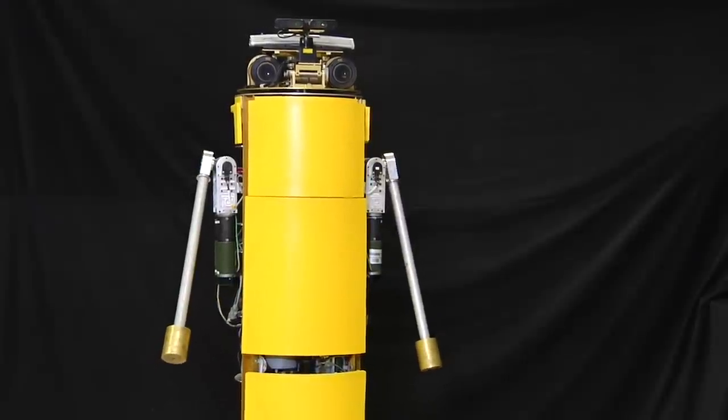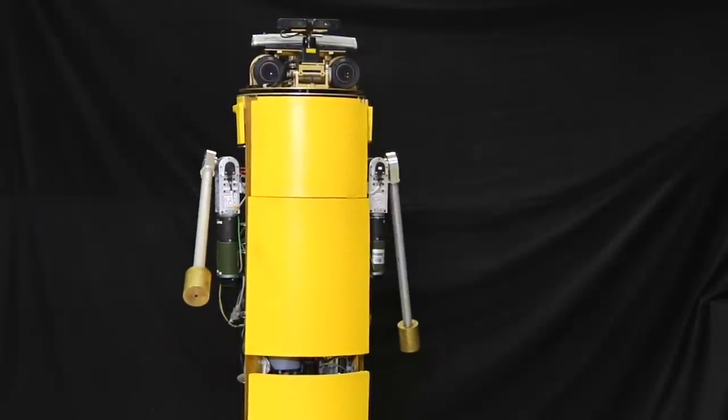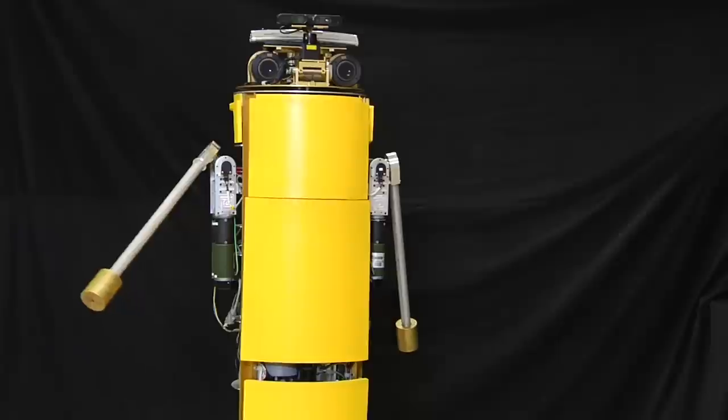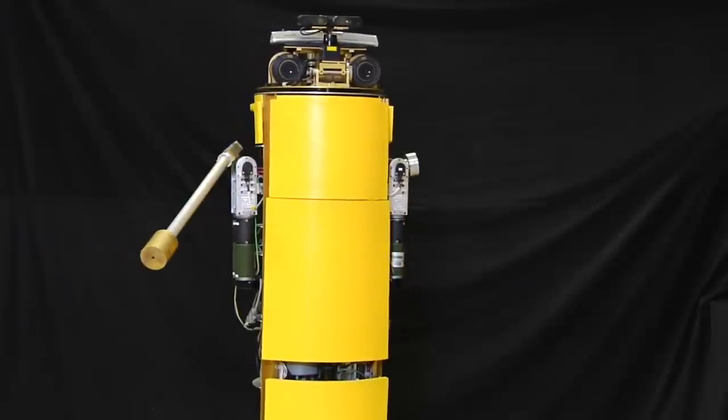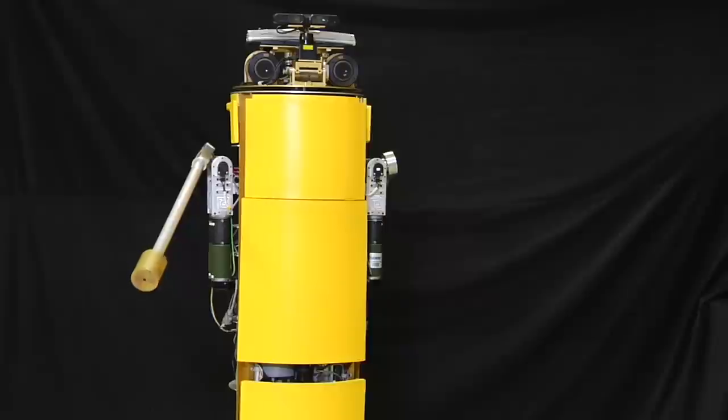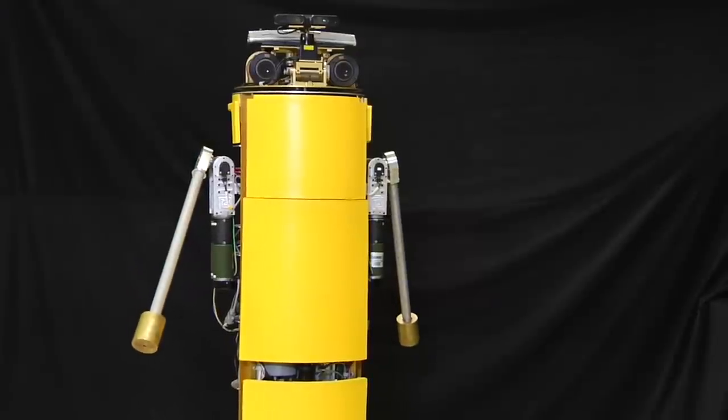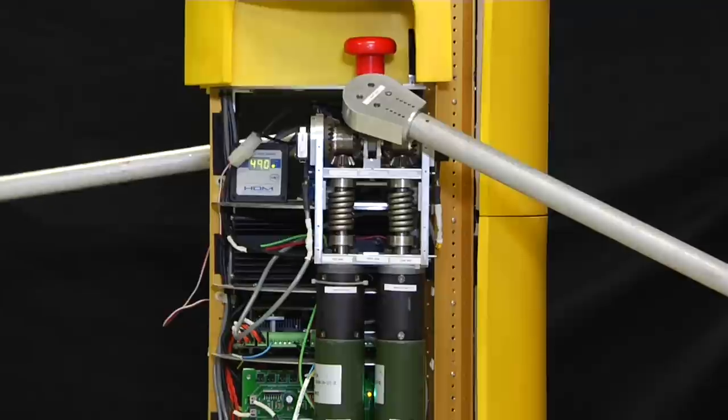With arms on the ballbot, manipulation is the next obvious step. Mobile manipulation with balancing robots like ballbot can be tricky because every time the arm moves, the center of mass shifts and hence the ball moves which is undesirable.